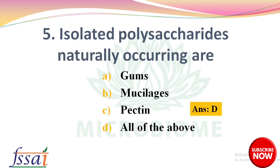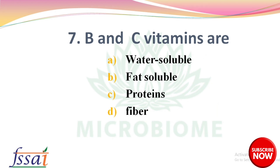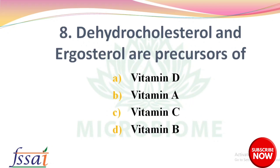Next question: vitamins A, D, E, and K are — options: water soluble vitamins, fat soluble vitamins, minerals, proteins. The right answer is option B, fat soluble vitamins. Next, B and C vitamins are — options: water soluble, fat soluble, proteins, fiber. The right answer is option A, water soluble.